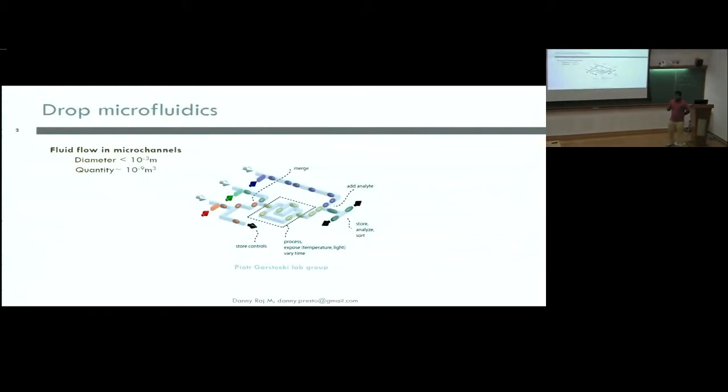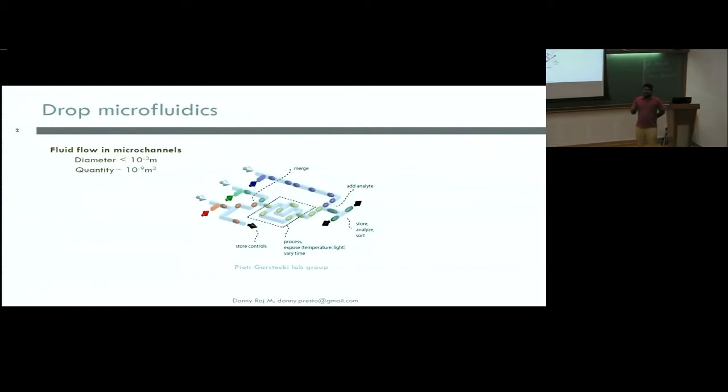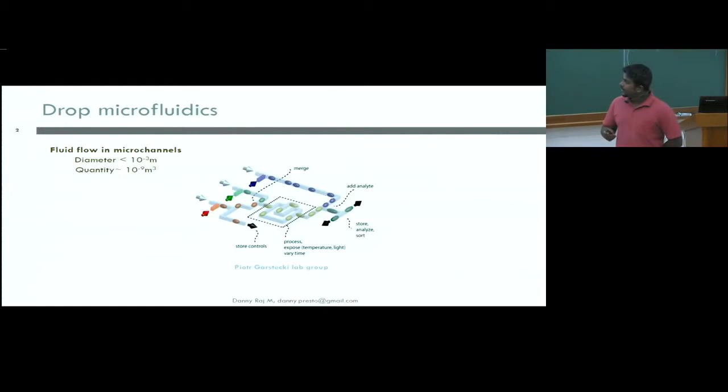This is a fluid flow problem, but it's very different from what we've been looking at in this complex system school. It's flow in very small channels, where channel diameter is less than a millimeter, and very small amounts of fluid. The Reynolds number associated with these flows is very small, in fact less than 1. It's called the creeping flow regime, and the inertia terms or the nonlinear terms in the governing equations are insignificant.